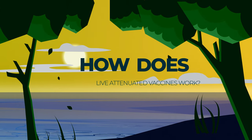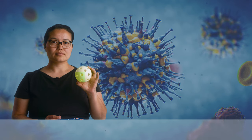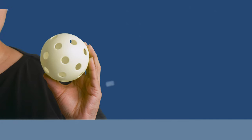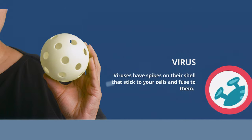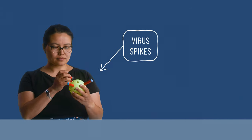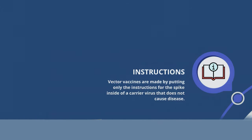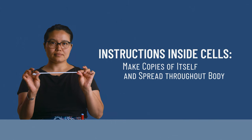Now how does a live attenuated vaccine work? Viruses are tiny, so let's build a model — a bigger version of what the virus looks like — to understand how we can get sick. The body of a virus is like a shell, and let's pretend that this plastic ball is the shell of a virus. Some viruses have spikes that stick out of its shell. The virus uses these spikes to stick to your cells and fuse with them. Let's add these foam darts to the ball and pretend they're spikes.